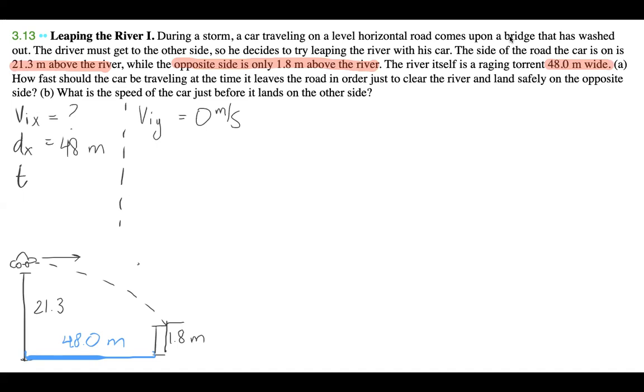Then dx we know is equal to 48 meters, and we don't know how much time this is going to take. Let's go to our y component side. We have viy, and dy, the distance in the y direction is going to be 21.3 meters minus 1.8 meters, which is 19.5 meters. We don't know what our t is, and we know that our acceleration is going to be negative 9.8 meters per second squared. This is all the information we already know, and we're trying to solve for vix, but we need t. Where can we get t from? We can get time from the y component because we have three pieces of information and only one unknown, so we can use one of the five kinematic equations.